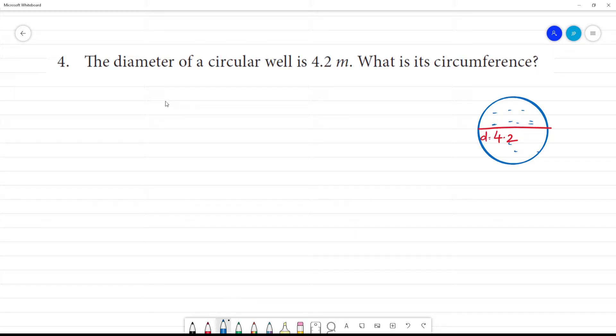What is radius? Radius diameter is equal to 4.2 meter. Radius is equal to 4.2 divided by 2 meter. 2 to 4 is 2.1. What is the radius? Radius is equal to 2.1 meter.